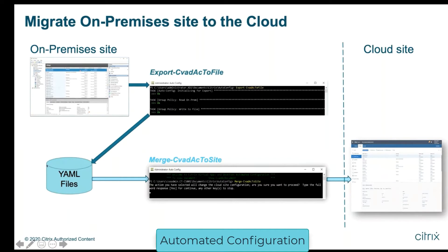Once you have this collection of YAML files, you can iteratively stage your migration. You run a merge command which imports some of the configuration onto your cloud site. You can migrate in stages — less critical users or applications first, and then as you get confidence, migrate other users and applications, even from more than one site. You can also run this tool multiple times to achieve desired state configuration between your on-premises site and your cloud site.